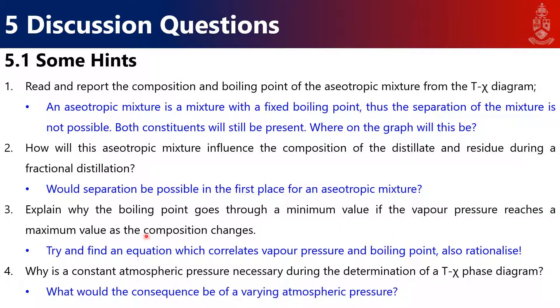Why is a constant atmospheric pressure necessary during the determination of the T-x diagram? Ask yourself: what would be the effect if we were varying our pressure? What would be the effect on the vapor pressure and on the boiling point? What is the definition of the boiling point of a substance? Those are all very important questions, and I hope this is giving you some hints to answering them.